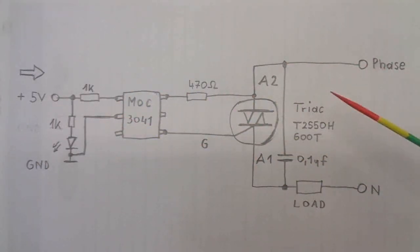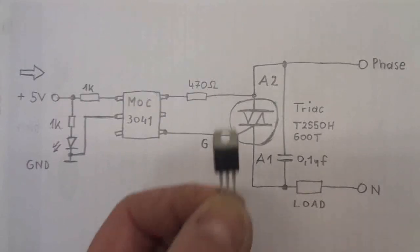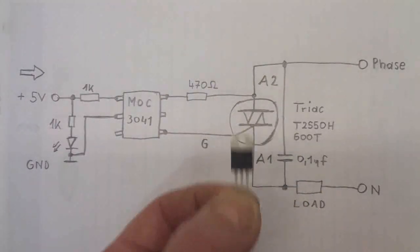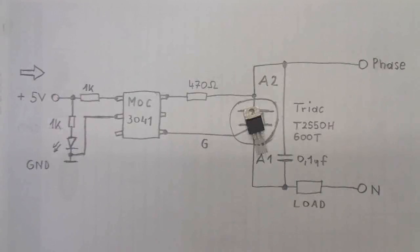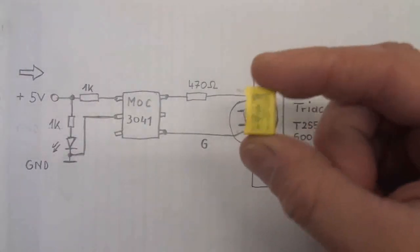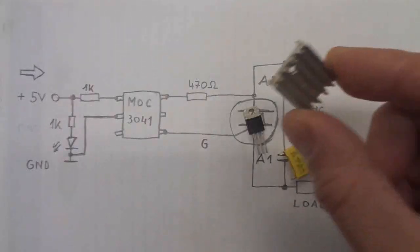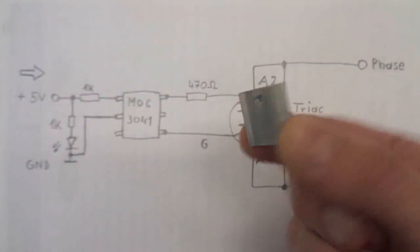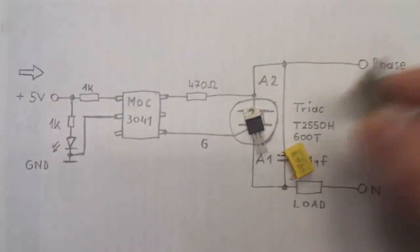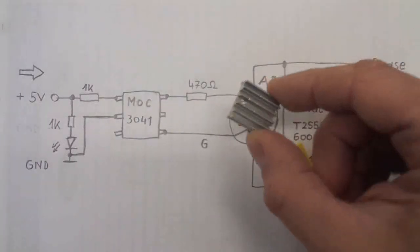Here it is. Here is the triac, noise suppression capacitor. The triac needs a heatsink if you're switching a higher load.